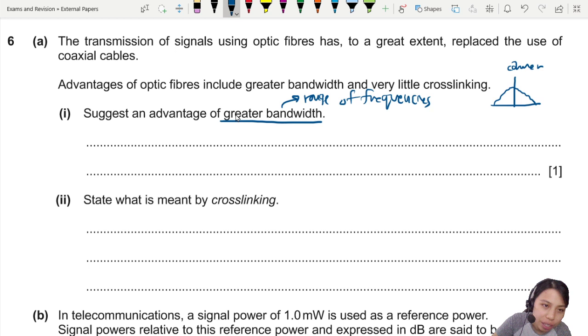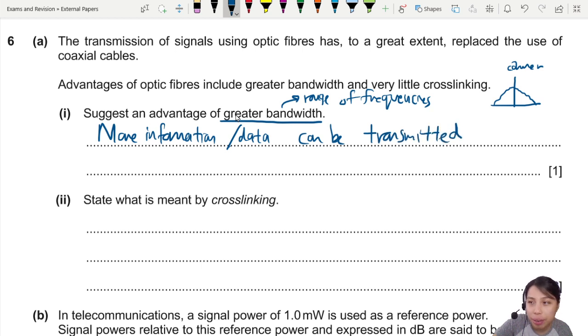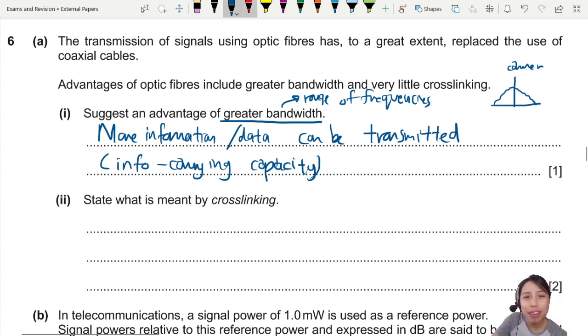So we're going to write that. More information can be transmitted, or if you want to stick to the mark scheme language, they will say greater information carrying capacity. If you talk about more info can be carried or transmitted, that's one mark.